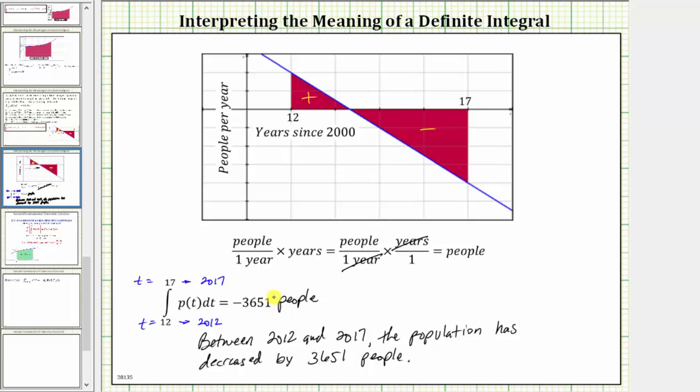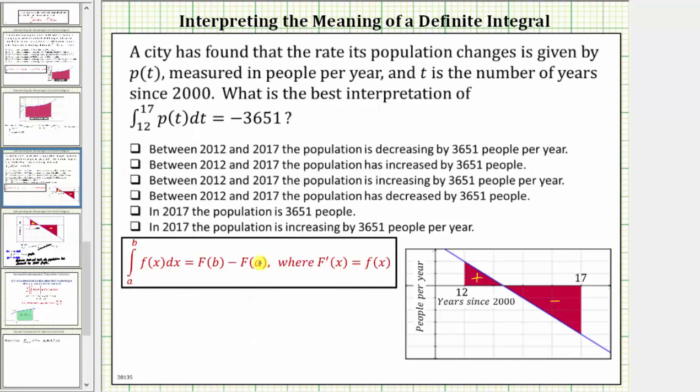And now before we select our answer though, let's also interpret this using the fundamental theorem of calculus, which is shown here. Beginning with the given integral, this would be equal to big P of 17 minus big P of 12, which we know is equal to negative 3,651.